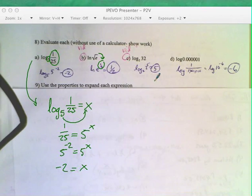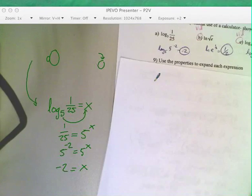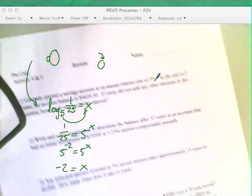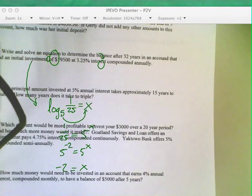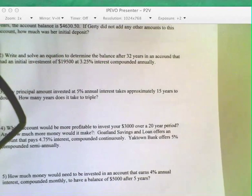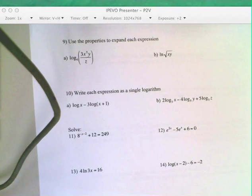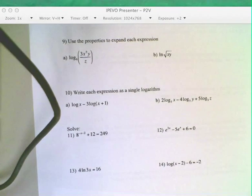Then we get to the expanding and condensing. Like problem 9A. So if you look at 9A. Use the properties to expand. And if you have a log base 6 in the problem, you will continue to have log base 6's. Okay? And then you just have to remember there's three rules.